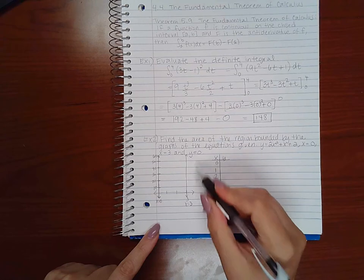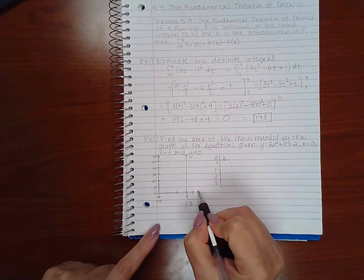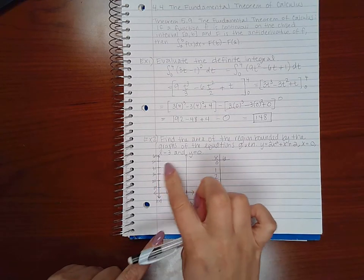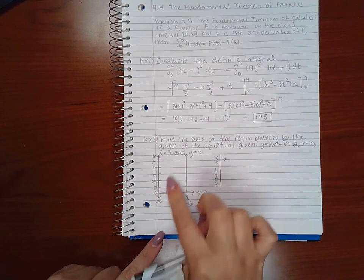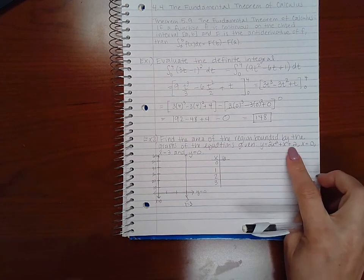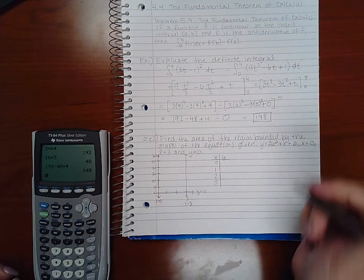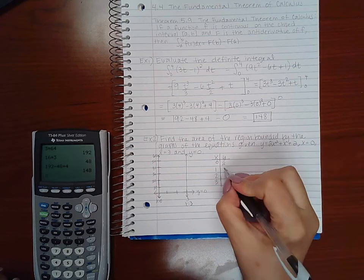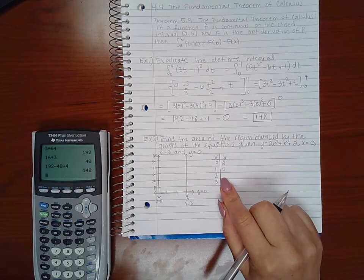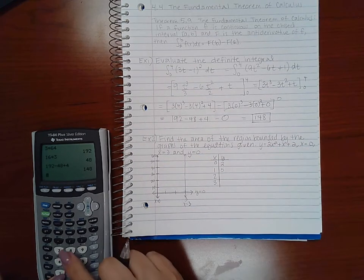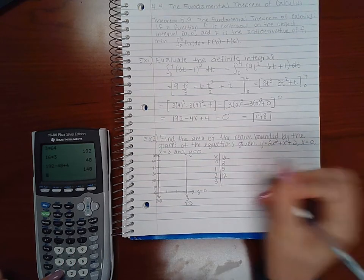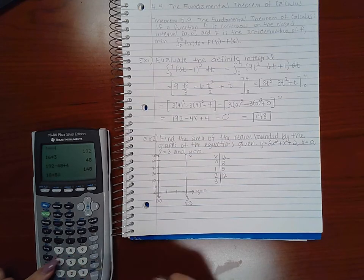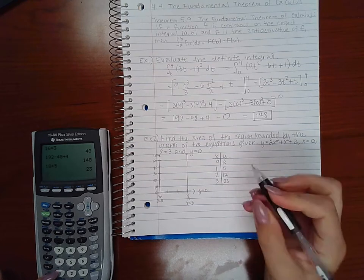And then y equals 0 is actually the x-axis. The only function I'm missing is what's going to be the top part of this region. So let's pick some x values to plug in. So if I plug in 0, I'm going to get 2. If I plug in 1, I'm going to get 2 plus 1 plus 2, which is 5. If I plug in 2, I'm going to get 8 plus 2 plus 2, which is 12. And if I plug in 3, I'm going to get 18 plus 3 plus 2, which is 23.